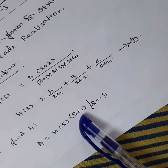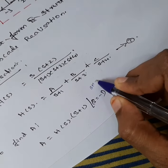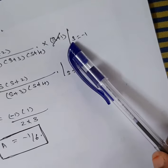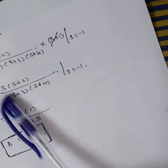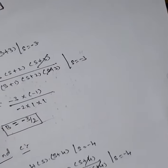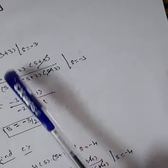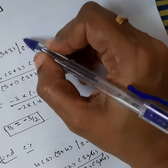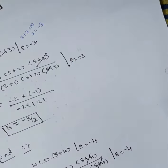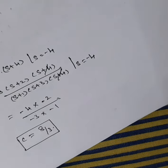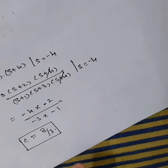To find A: multiply H(s) by (s+1) and substitute s = -1. The (s+1) terms cancel, giving A = (-1)(-1+2)/((-1+3)(-1+4)) = -1/6. Similarly, B is found by multiplying by (s+3) and substituting s = -3, giving B = -3/2. For C, substitute s = -4, giving C = 8/3.